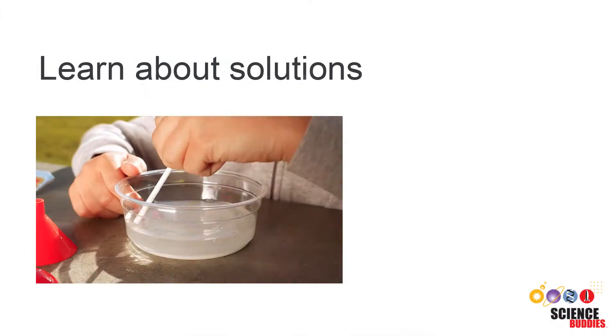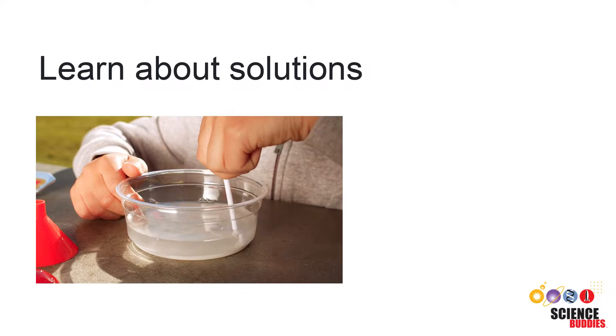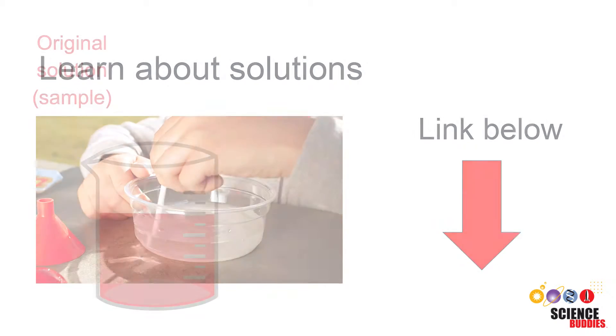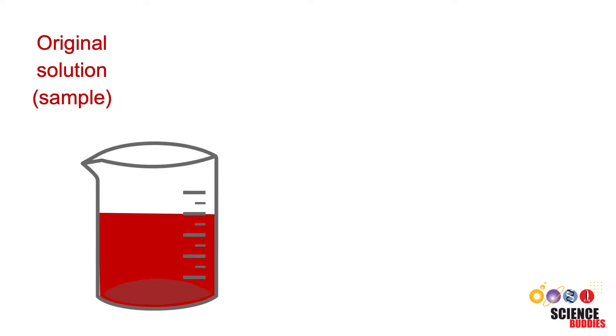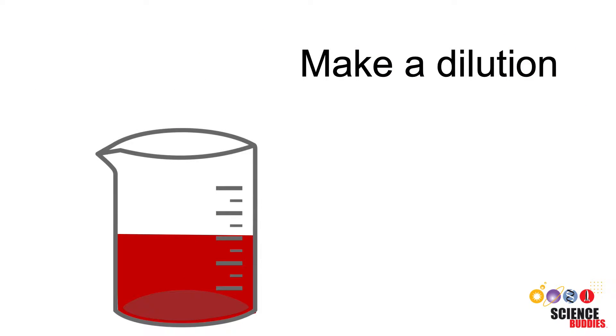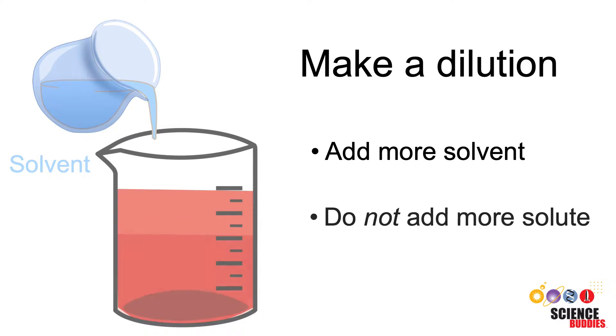If you want to review what solutions are and how they are made, you can watch our solutions video linked in the description. Diluting a sample or solution simply means reducing the solute concentration in the solution. The simplest way to dilute the solute is by adding more solvent to the solution without adding more solute.